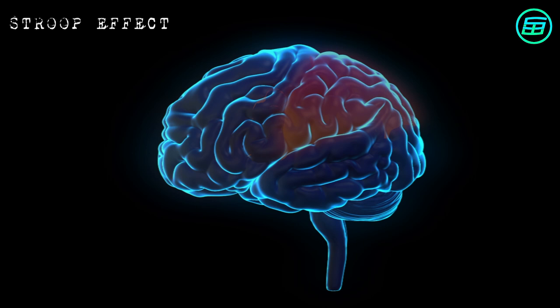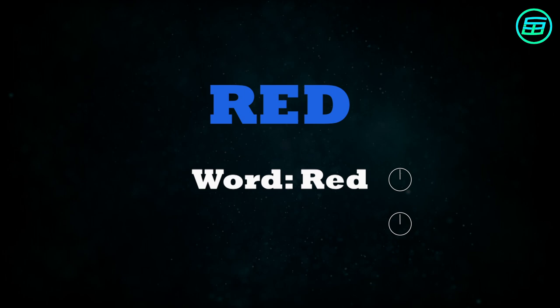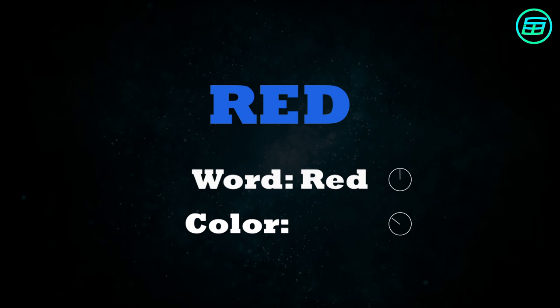The Stroop Effect is a type of delay in our perception. For example, while you can instantly read red text that's printed in blue, it takes a bit longer to perceive and name the color of the text.